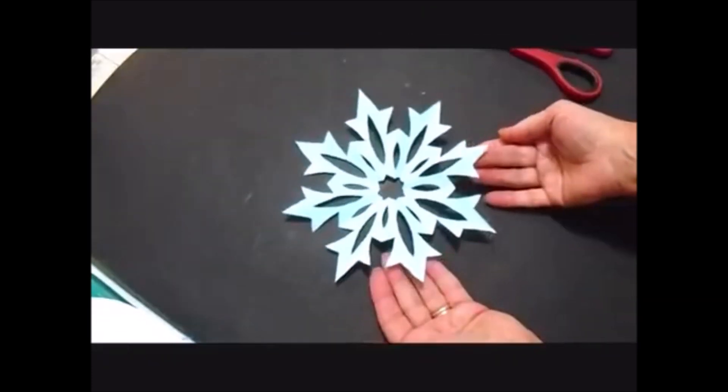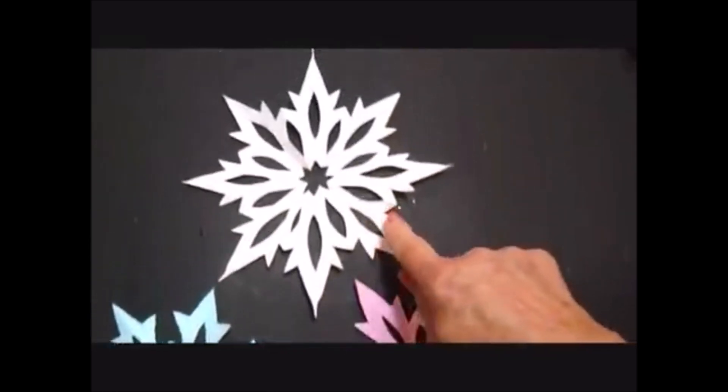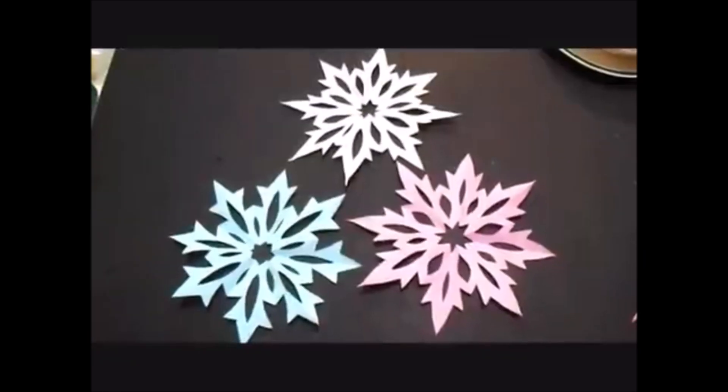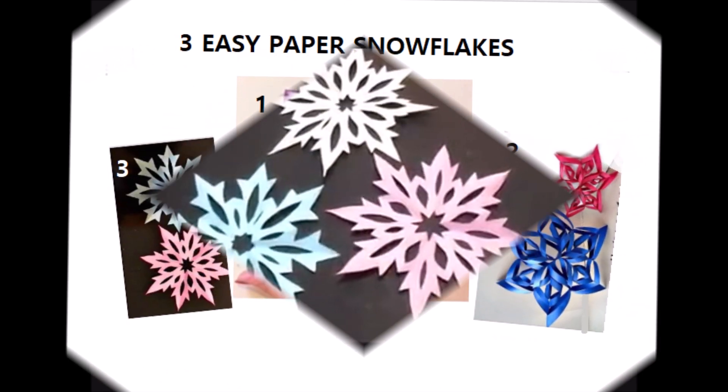And there you go. You'll have a lovely snowflake. I've got a pink one, a blue one, and a white one. Now those are very easy to make. That's it for this video. Thanks for watching. Bye for now.